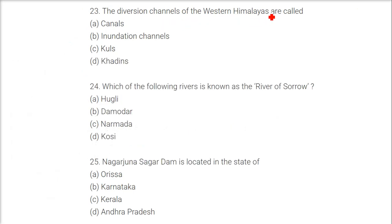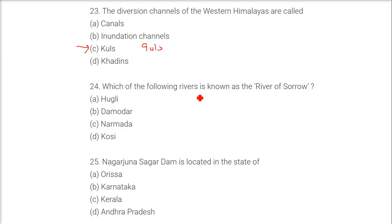The diversion channels of the Western Himalayas are called? In Western Himalayas they are called Kuls and Guls.